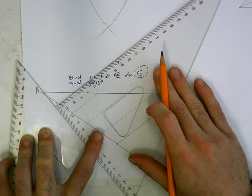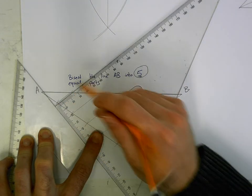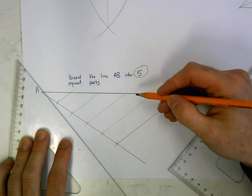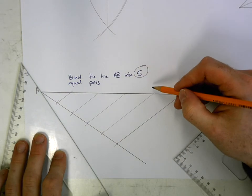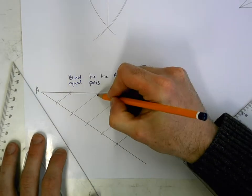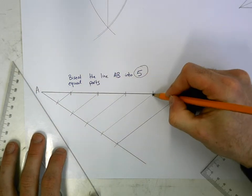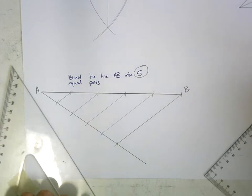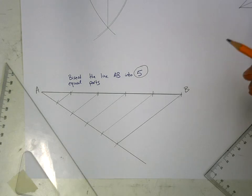Now when you draw those lines, they're all going to go up towards the line AB. They're going to cut it, and where they cut it is a division on your line. And at the end of it, you should have one, two, three, four, five divisions. Okay, so that'll give you five equal parts.